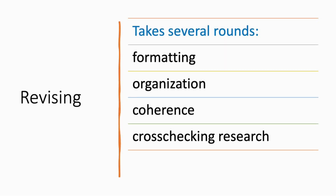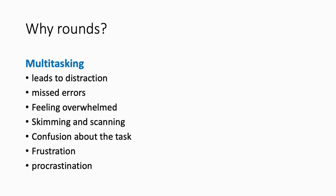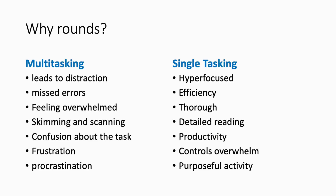So what would we be focusing on in these rounds? Formatting, organization, coherence, and cross-checking research. Why do we do rounds? Because if you try to do all those things at the same time, it opens it up for errors. Whereas if you do single tasking, you're hyper-focused, efficient, and thorough. You're reading for one thing — only for formatting, only for organization, only for research. It helps you scan the paper and zero in on those elements that need to be corrected.